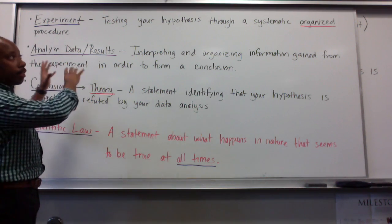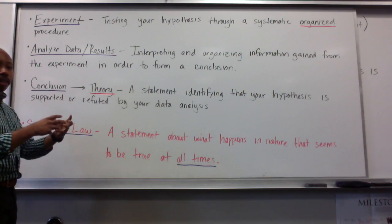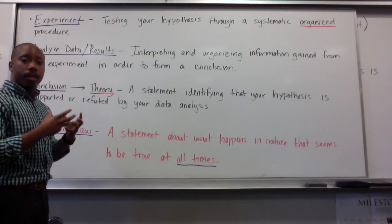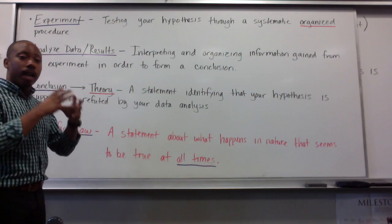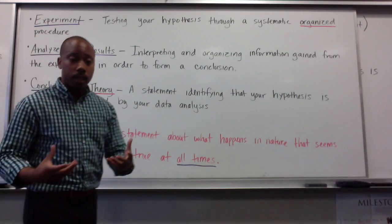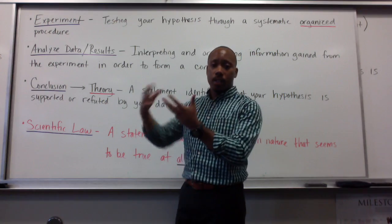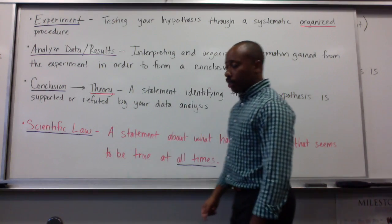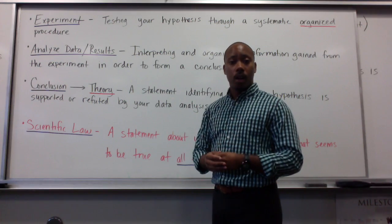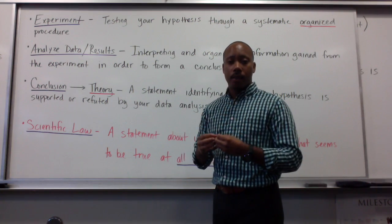If you do the same experiment over and over again and you get the same conclusion each time, then you can form what is known as a theory — something that is proven because you've done the experiment repeatedly and gotten the same results. Once your theory has been accepted throughout the world by many people and reaches the next level, it's called a scientific law. A scientific law is a statement about what happens in nature that seems to be true at all times. For example, many people have accepted Sir Isaac Newton's theories, and now they are laws.